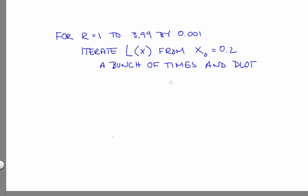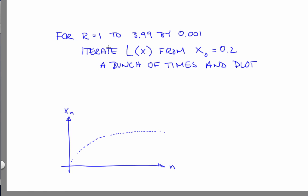For some r values, the transient is really long. How do you think that will manifest in a bifurcation diagram? There's some fixed point, but the trajectory is taking a really long time to get there. What that will look like on a slice of a bifurcation diagram is a series of points coming up from the axis and slowly getting closer and closer but taking forever to get there.